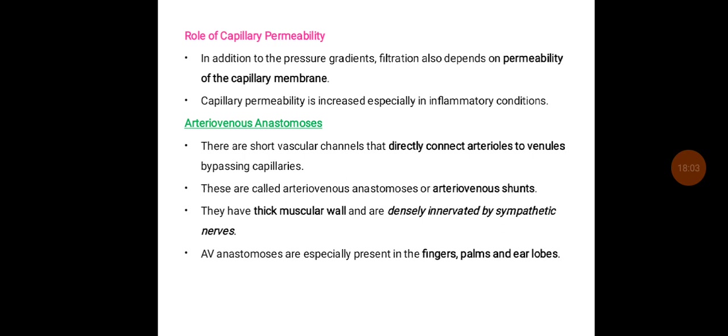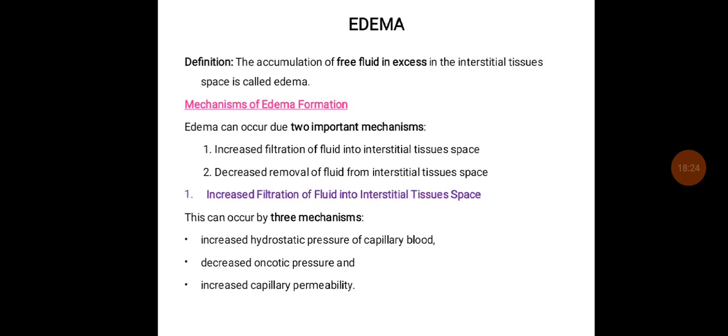Arteriovenous anastomosis are short vascular channels that directly connect arterioles to venules, bypassing the capillaries. They have a thick muscular wall and are densely innervated by sympathetic nerves. AV anastomoses are especially present in the fingers, palms, and ear lobes.